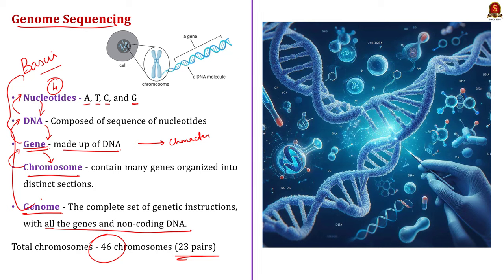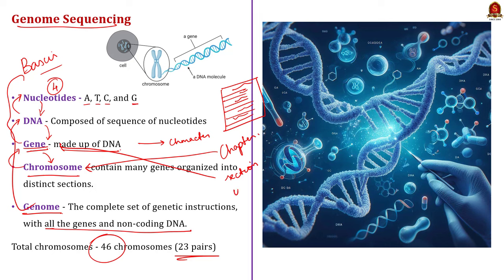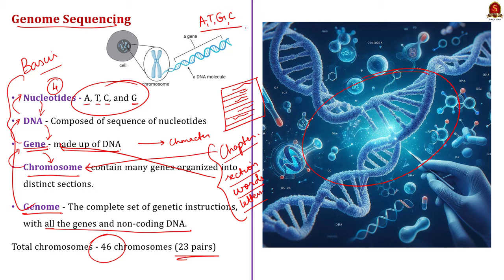Imagine your body as a giant instruction manual for building and operating you. This manual has many chapters — each chapter is a chromosome. Under each chapter are many sections — each section is a gene. Under each section are many words — the words are DNA. Inside the words are letters — the letters are nucleotides: adenine, guanine, cytosine, thymine. Genome sequencing is like reading through this instruction manual letter by letter. Scientists use special tools and machines to figure out the order of these letters — A, T, G, C — to understand what the genome is saying.